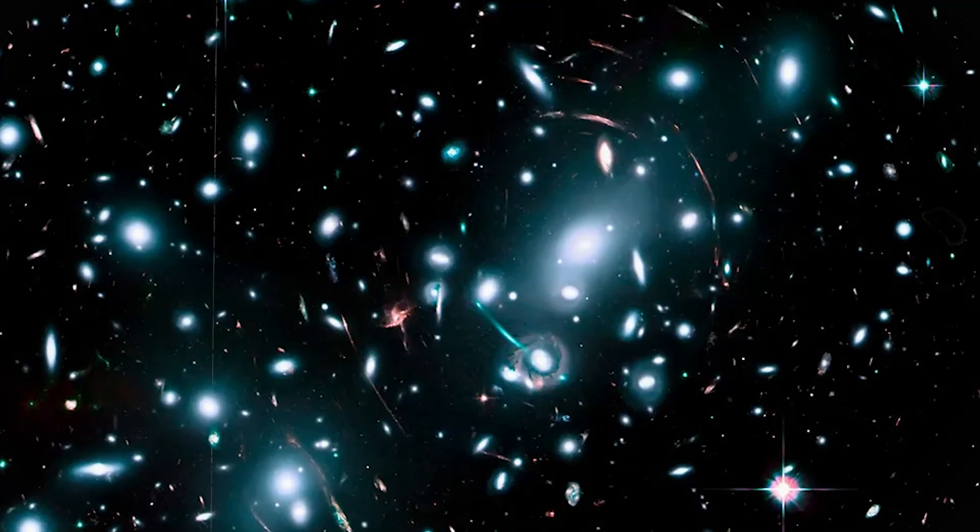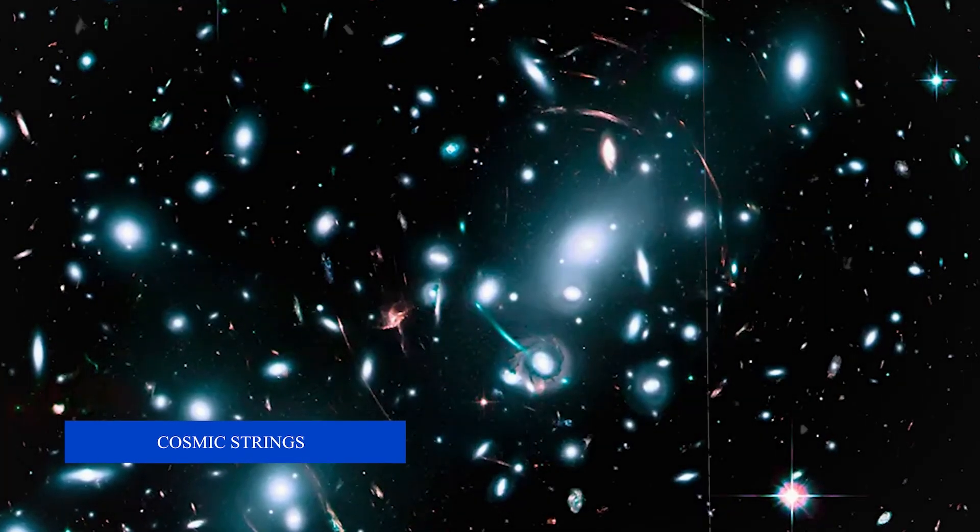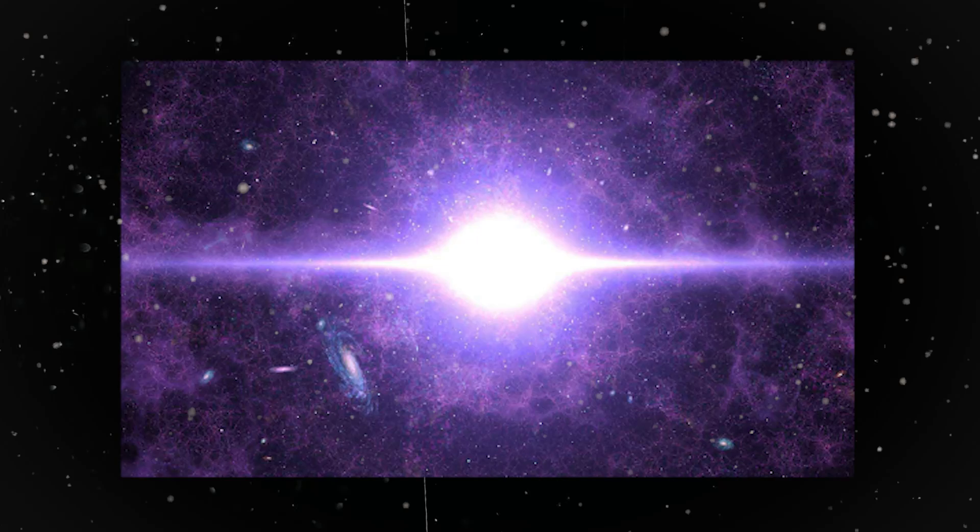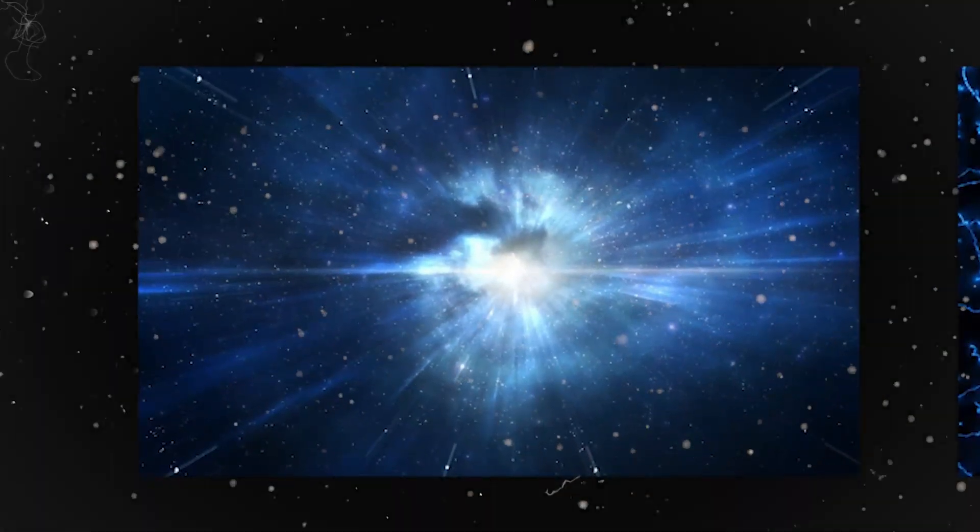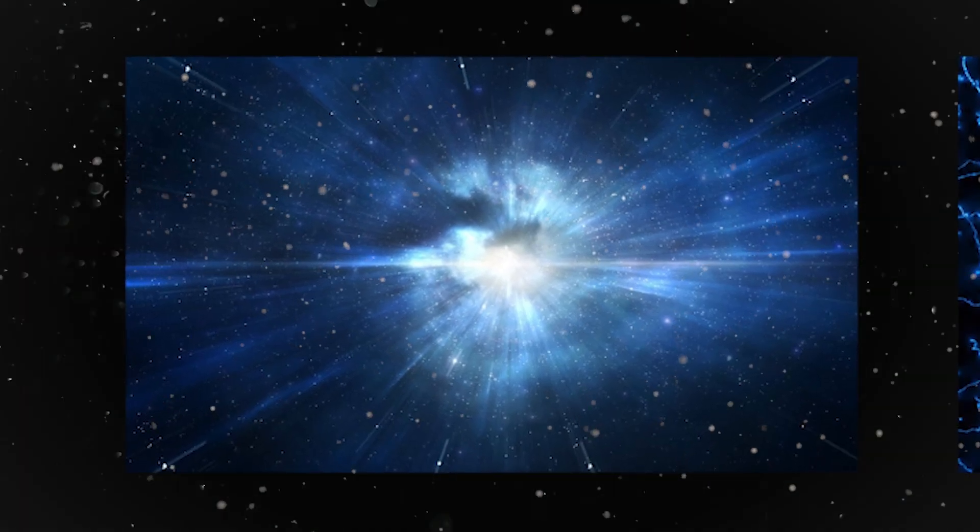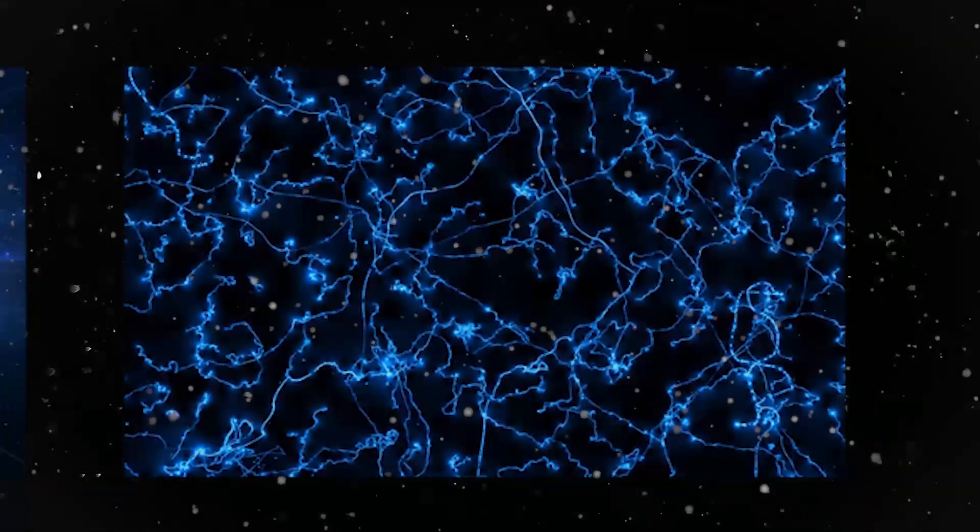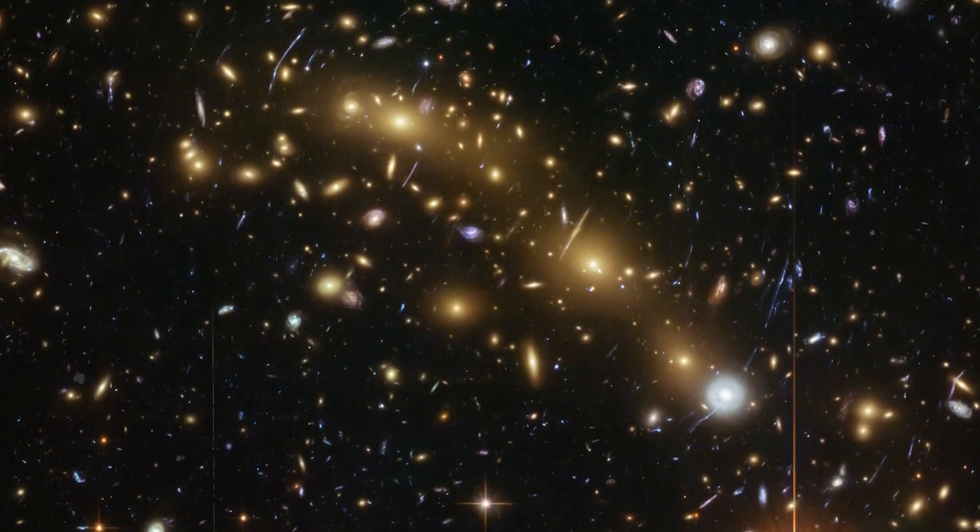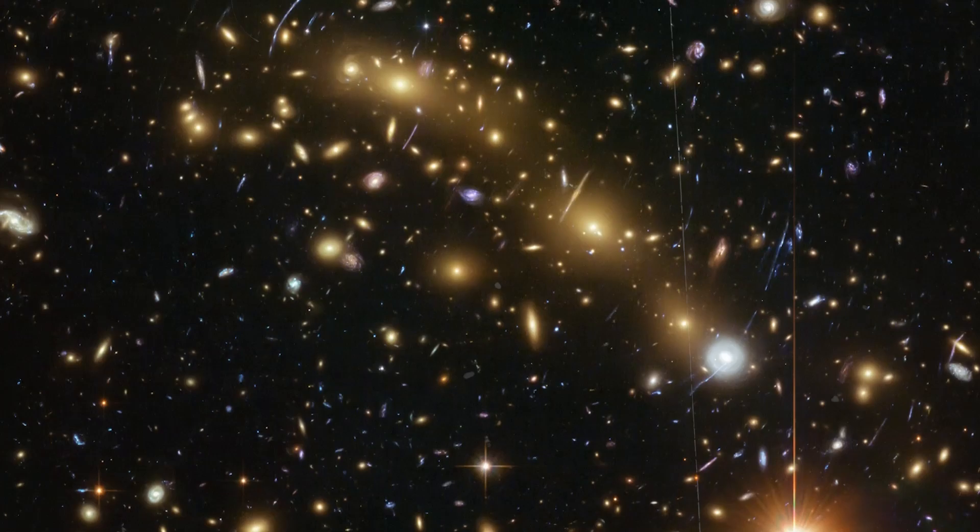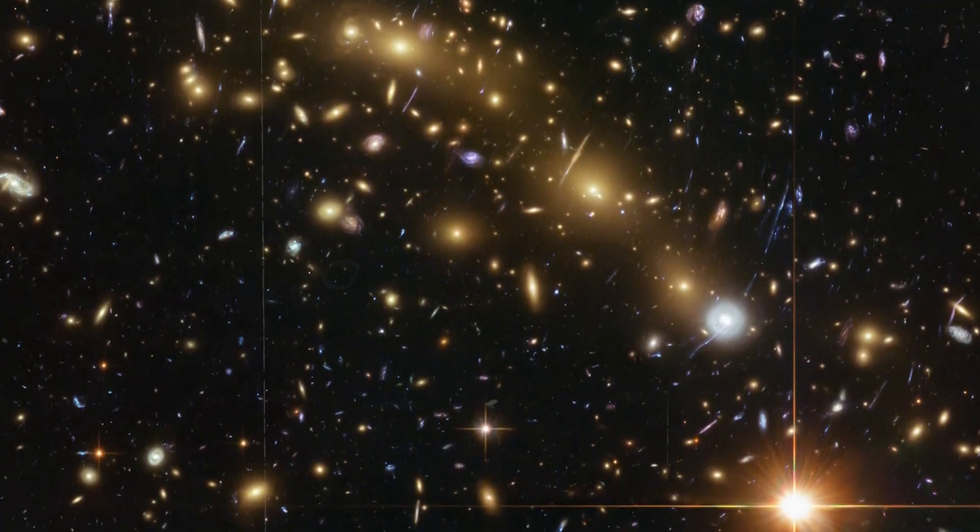Another intriguing line of inquiry delves into the realm of cosmic strings. These hypothetical one-dimensional entities, remnants from the Big Bang, are predicted to possess immense gravitational influence. If they exist, these cosmic strings could have stretched across billions of light-years, influencing the distribution of matter in the early universe and potentially seeding the formation of structures like the Big Ring.